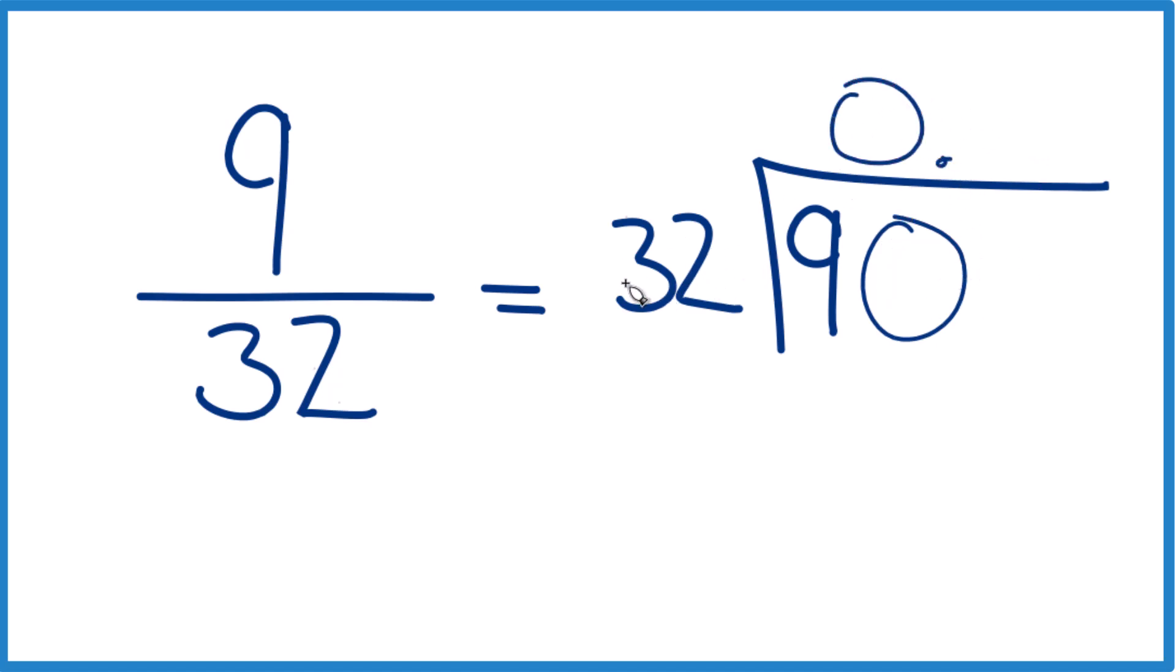So now 3 times 32 is too much, but 2 times 32, that would be 64. Subtract, we have 6 and then 8 minus 6, 26 here. It doesn't go into 26, but we could call it 260 if we move over a decimal place.